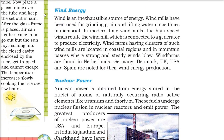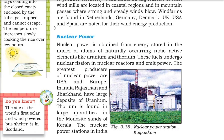Wind is inexhaustible. Windmills have been used for grinding grains and lifting water since ancient times. In modern times, high-speed wind rotates windmills connected to a generator to produce electricity. Wind farms with clusters of windmills are located generally in coastal regions and mountain passes where there are strong and steady wind flows. Wind farms are found in Netherlands, Germany, Denmark, UK, USA, and Spain. The world's first solar and wind-powered bus shelter is in Scotland.